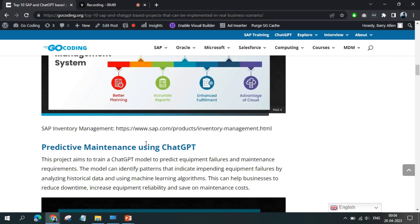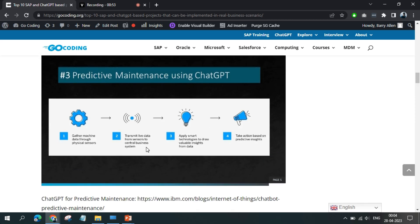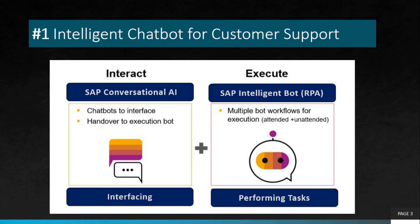The first project in our list is an intelligent chatbot for customer support. This project aims to build a chatbot using SAP Conversational AI and ChatGPT to provide intelligent and personalized responses to customer inquiries, complaints, and requests. The chatbot will be trained using natural language processing and NLP techniques to understand customer queries and provide appropriate responses.